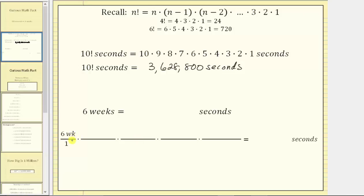For the first unit fraction, because one week equals seven days and we want the units of weeks to simplify out, we will write one week in the denominator and seven days in the numerator. Because one week equals seven days, this fraction equals one. Now the units of weeks simplify out and we're left with the units of days.